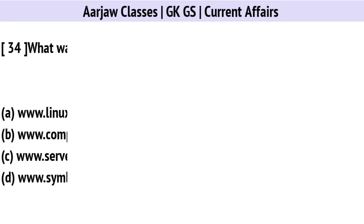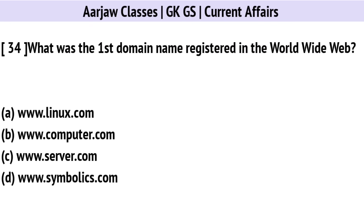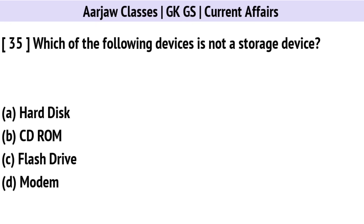What was the first domain name registered in the World Wide Web? The correct option is D: www.Symbolics.com.